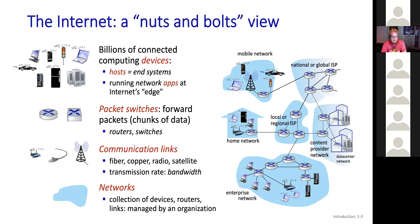We won't worry about packet switchers and routers in depth, but briefly: a router is a device that exists for one purpose — to leave one network and go to a different one. Your house is a network; you have a router called a modem that leads to your ISP's network. If a network doesn't have a router, it's just a local area network with no way of leaving. A switch is a layer below the router and is only concerned with sending data on the same network — we won't be worrying about that in this course.